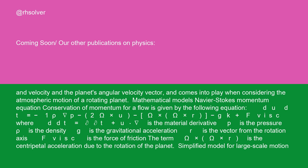Mathematical models - Navier-Stokes momentum equation: conservation of momentum for a flow is given by the following equation: Du/Dt = -1/ρ∇p - 2Ω × u - Ω × (Ω × r) - gk + F_visc, where D/Dt = ∂/∂t + u·∇ is the material derivative, p is the pressure, ρ is the density, g is the gravitational acceleration, r is the vector from the rotation axis, F_visc is the force of friction, and the term Ω × (Ω × r) is the centripetal acceleration due to the rotation of the planet.